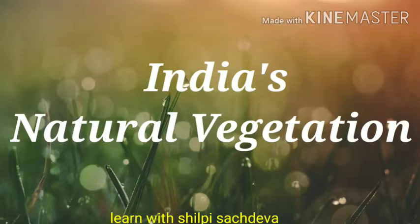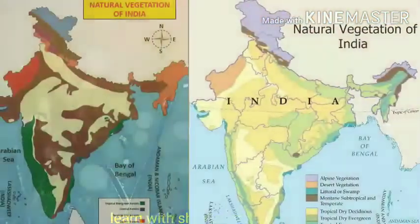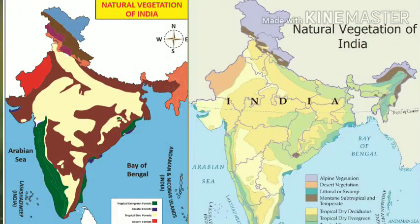Hello everyone, today we are going to discuss about India's natural vegetation in this video. Our country India has a large variety of natural vegetation. This is due to precipitation, soil, climatic conditions and physical features.